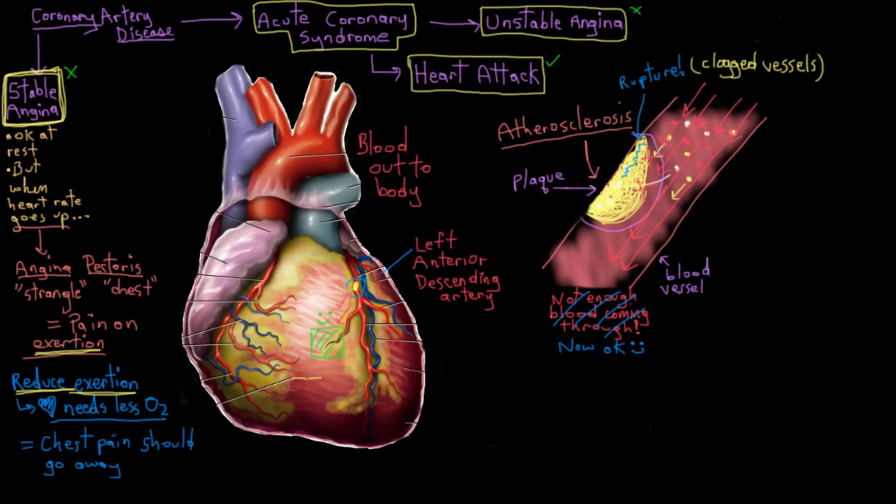And when it bursts, it exposes all of the plaque material, all that fatty, gross, sort of necrotic—necrotic means dead cells, by the way, because the cells in here are dead at this point. It exposes them to the blood. And plaque material is really thrombogenic. What does thrombogenic mean? Thrombogenic means it causes blood clots to form on it.